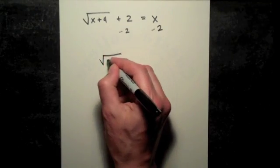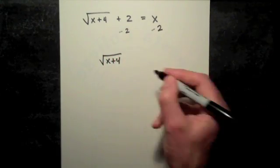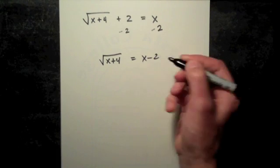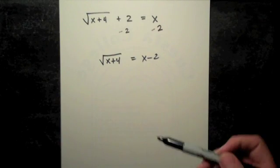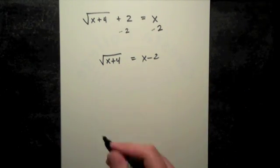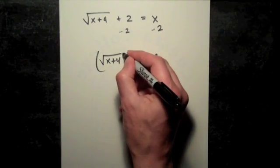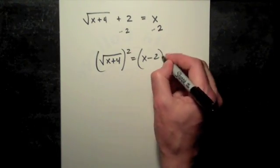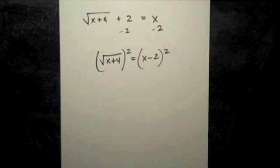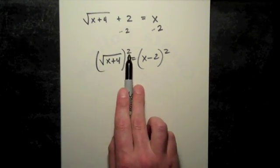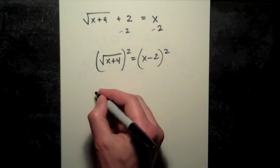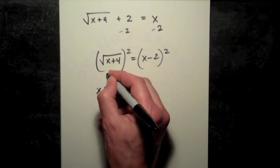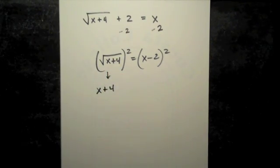Now we're left with the square root of x plus 4 on the left and x minus 2 on the right. Now we can move on to step two and square both sides of this equation. So on the left side, the square is going to cancel the square root and we're just left with the expression x plus 4.